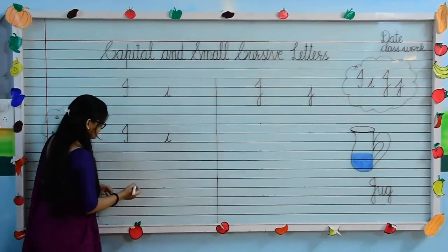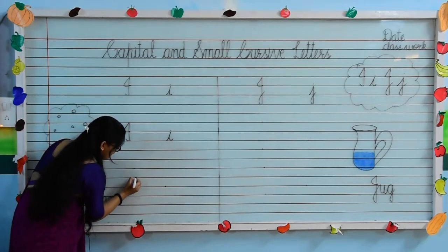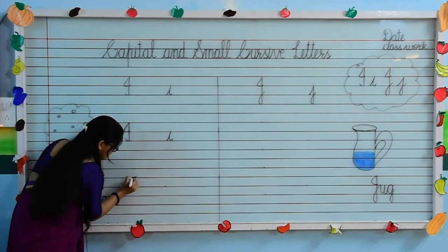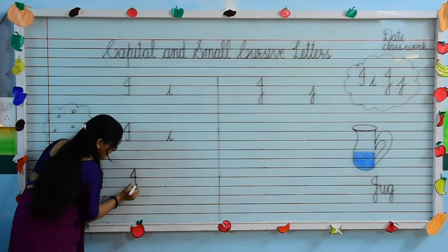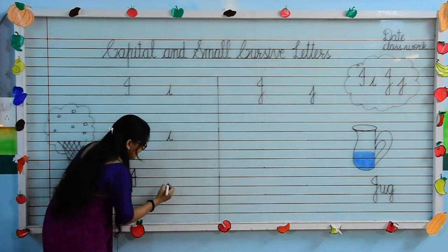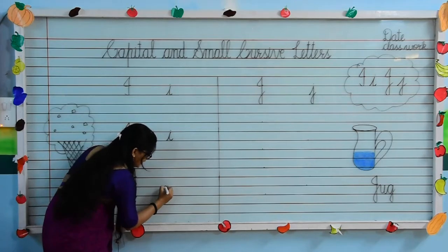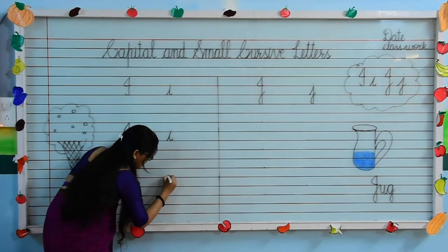Again we will write. Put your pencil on the second line, draw sleeping line, turn, slanting line, touch the first line, draw standing line moving towards the third line and turn — this is our capital cursive I. Small cursive I: again put your pencil on the third line, draw slanting line, touch the second line and draw a curl, then full stop. Small cursive I.